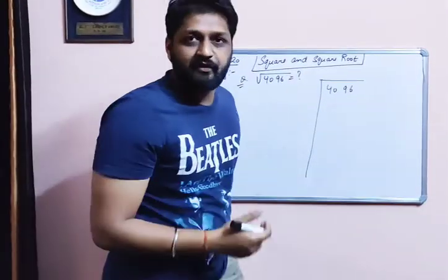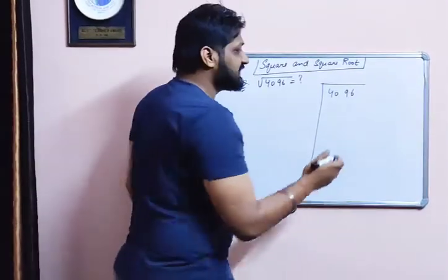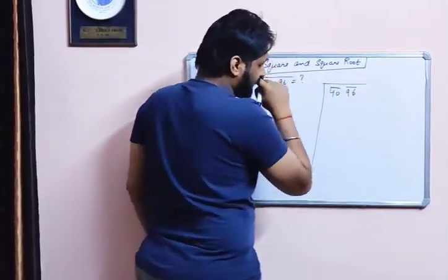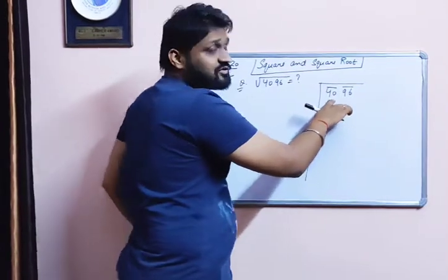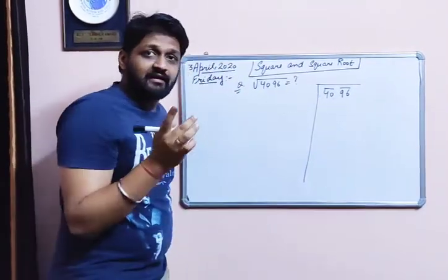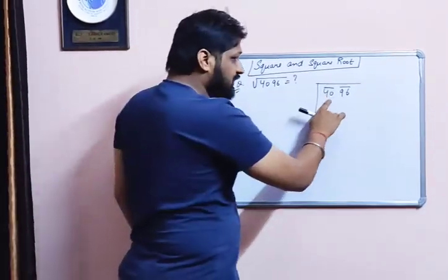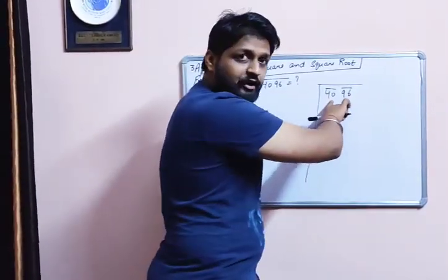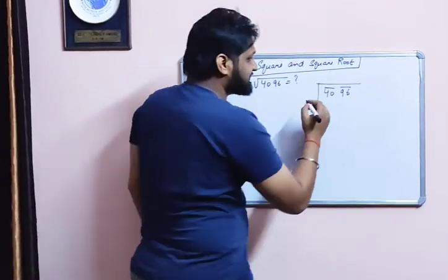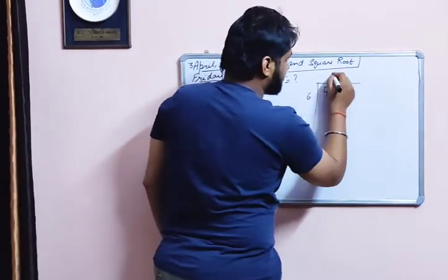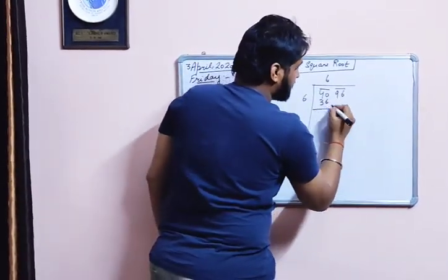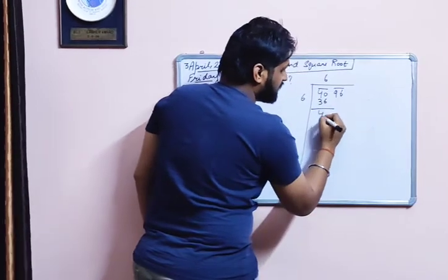The first step is to make the pairings on the right-hand side — this pair and this pair. Now we have to think of a number whose square is equal to 40 or just less than 40. The number is 6. 6 multiplied by 6 is 36, and the remainder is 4.